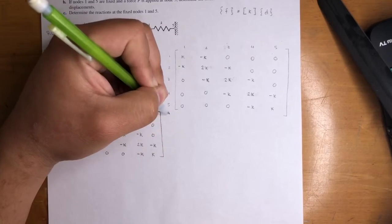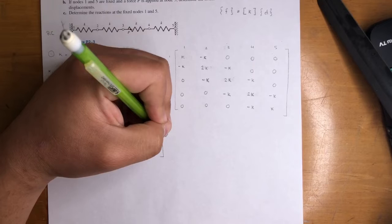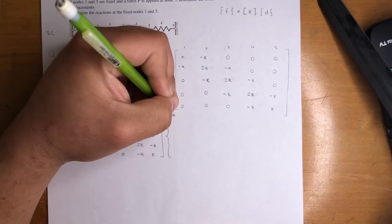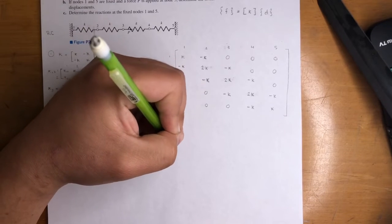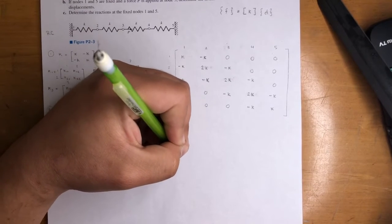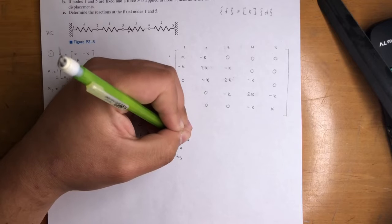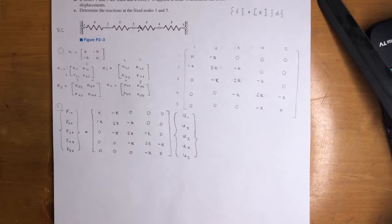Then the displacement vector, right? So that's going to be U1, U2, U3, U4, U5. Alright, cool.